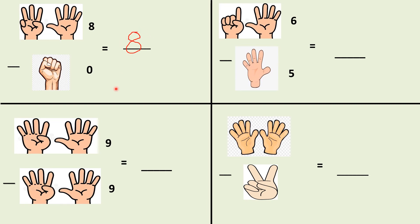Now see this picture. How many fingers are open? One, two, three, four, five, six, seven, eight, nine — I have written nine over here. This is the minus sign. In this picture, how many fingers are open? One, two, three, four, five, six, seven, eight, nine. So it means from these nine fingers, I have to remove nine fingers. If I cut nine fingers, how many fingers are we left with which are open? Zero. Because we have removed all nine fingers. So my answer would be zero.